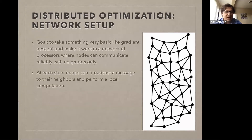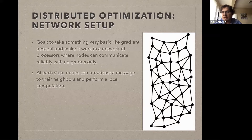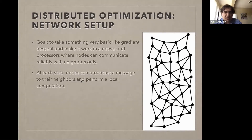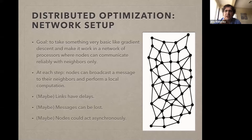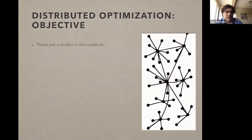Now I'm going to make things more formal. We're going to take gradient descent and ask how we can make it work with message passing in a network of processors — not necessarily with bottlenecks, just any graph. In the simplest possible model, at each step, nodes can broadcast a message to their neighbors and perform a local computation. We could also look at more complicated models or add realistic effects like link delays, message losses, or asynchronous nodes.